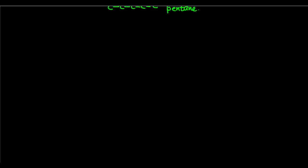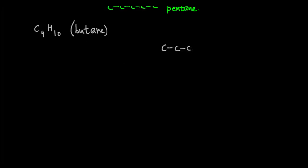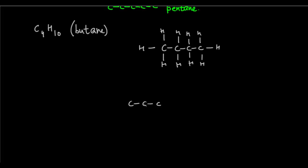When we take a particular formula, we just restricted ourselves to one particular structural formula. But actually that's not the case — sometimes carbon atoms can be arranged in different ways and give different structures for the same molecular formula. For example, let's look at the molecular formula C4H10. One way it can be arranged is as a straight chain of four carbon atoms with the hydrogens attached.